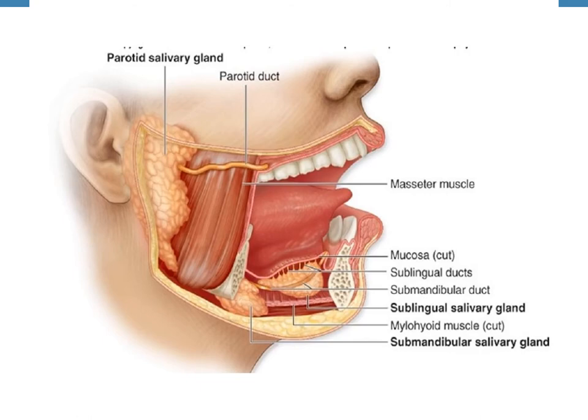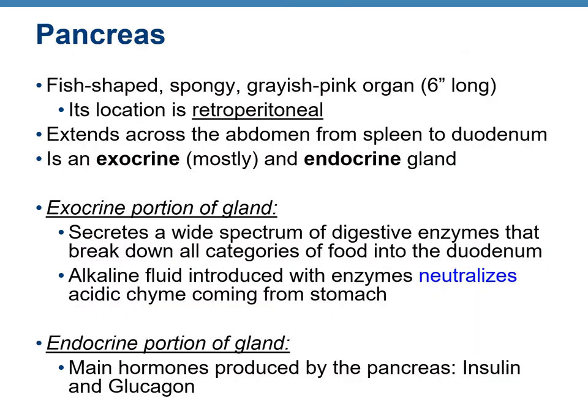The pancreas plays a very important role in digestion. It is a fish-shaped, spongy organ about six inches long and is a mixed gland with both exocrine and endocrine functions. The exocrine part secretes a variety of digestive enzymes released into the duodenum, along with an alkaline fluid that neutralizes the acidity of chyme from the stomach. The endocrine part secretes four hormones; the two main ones are insulin and glucagon, which lower and elevate blood glucose levels respectively.